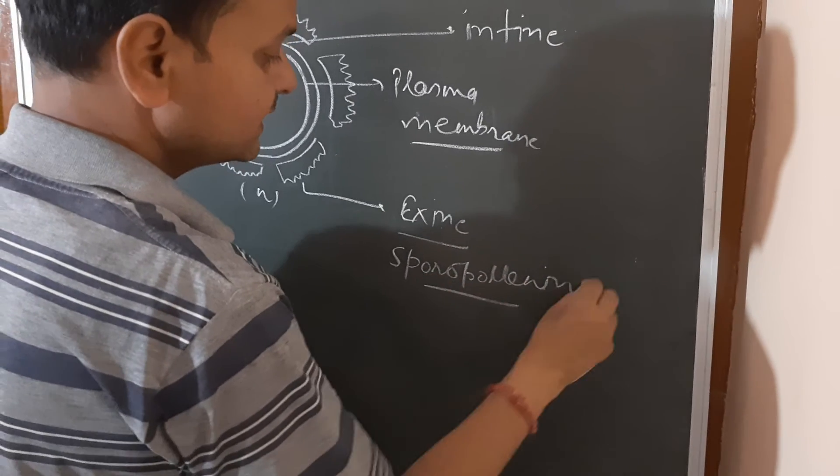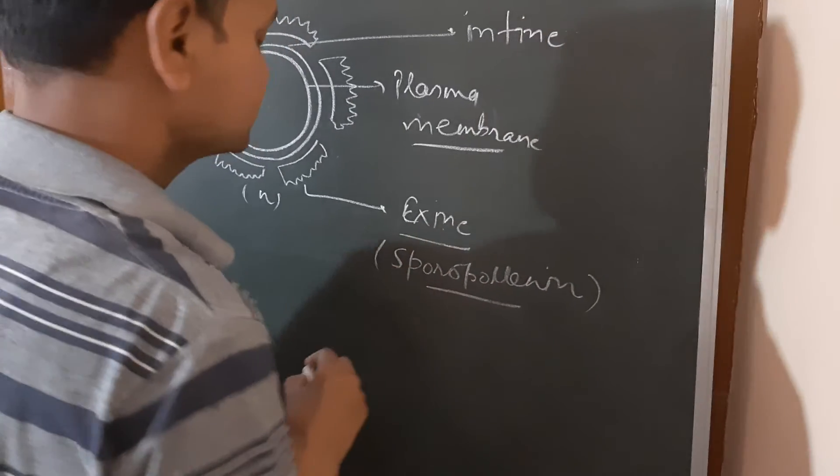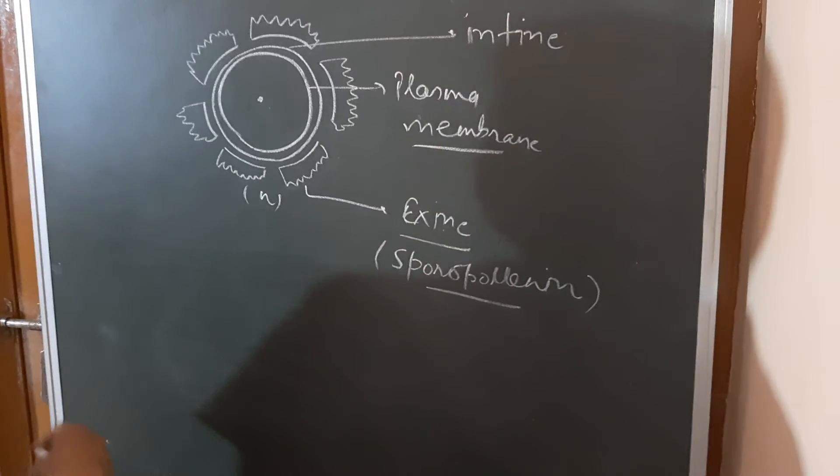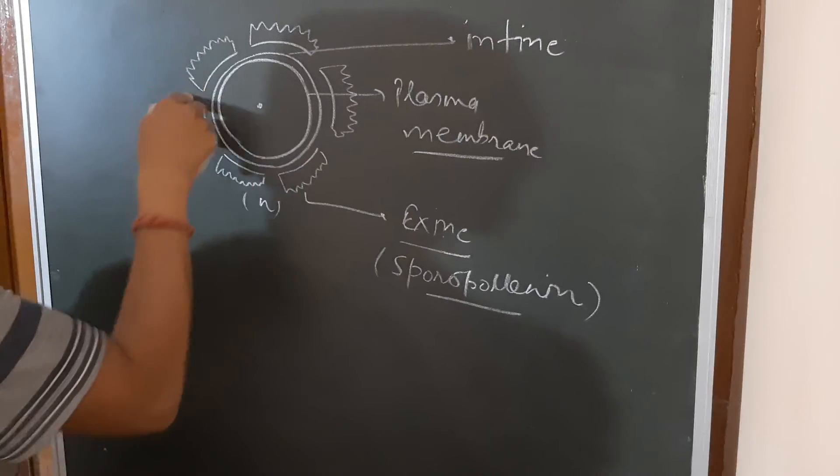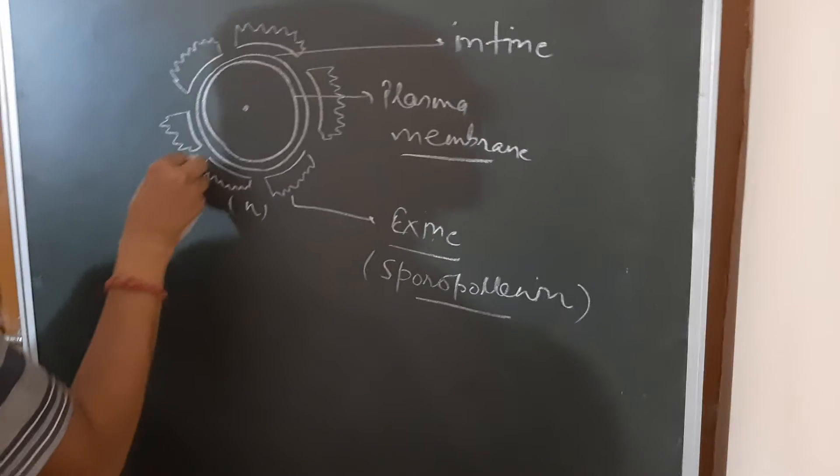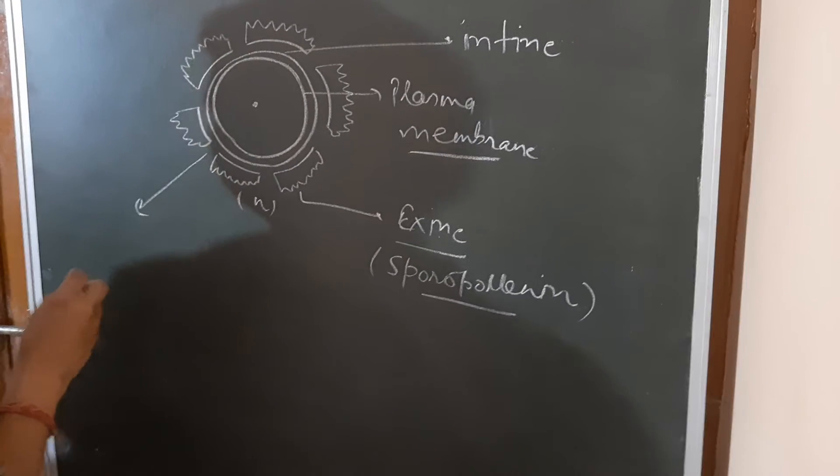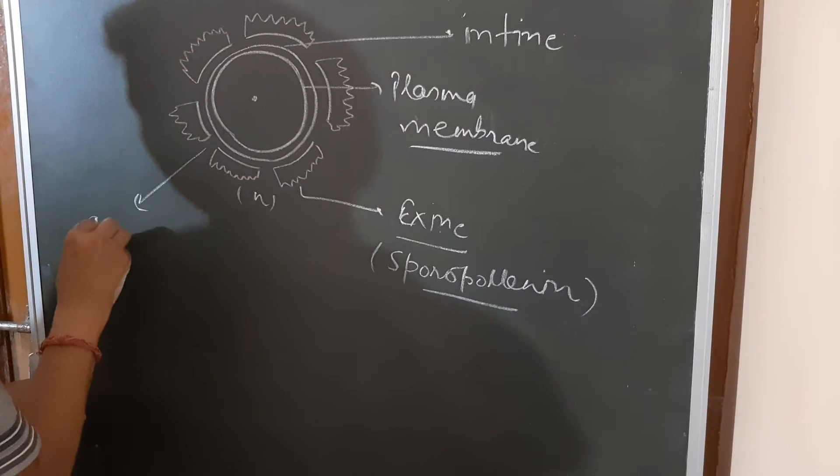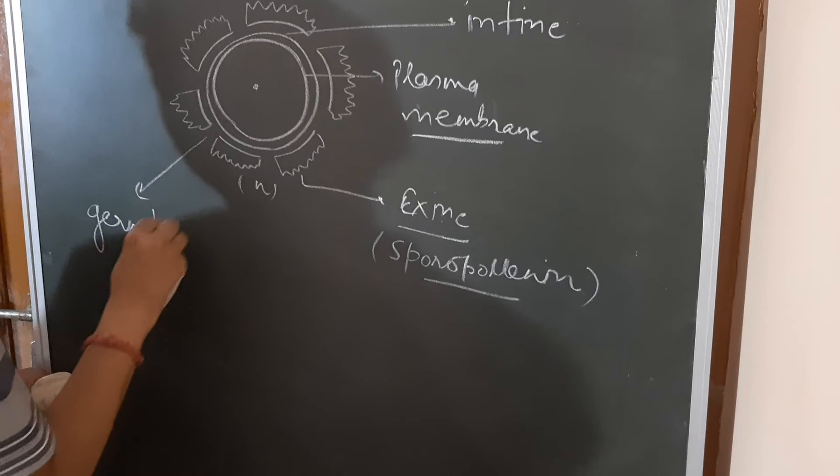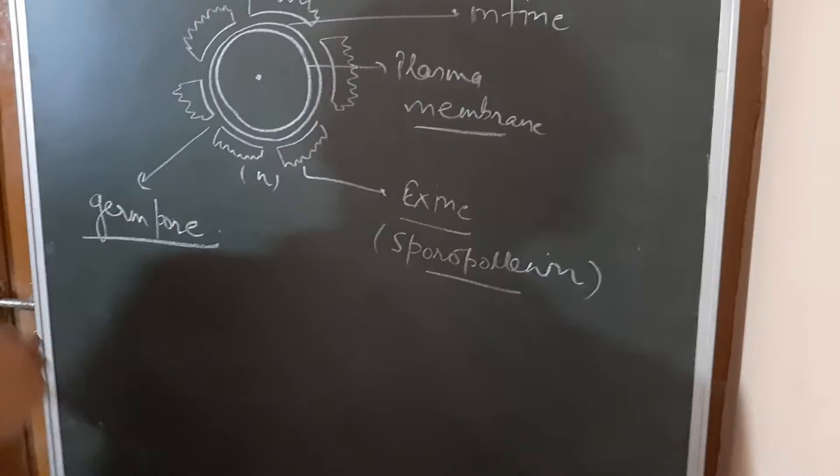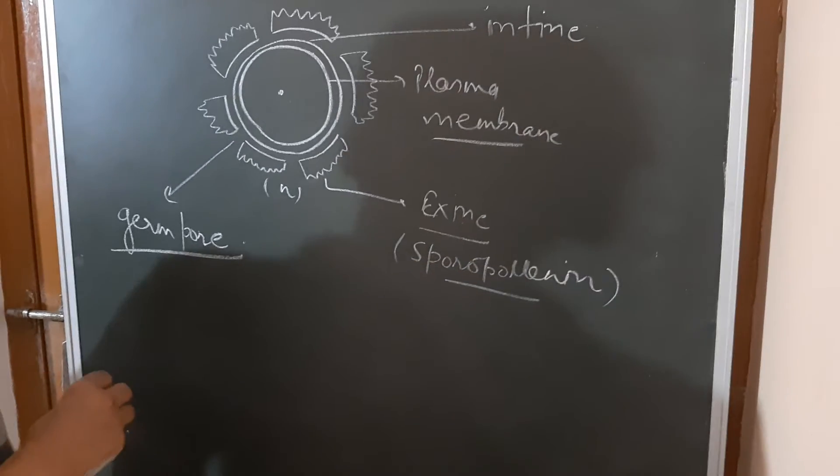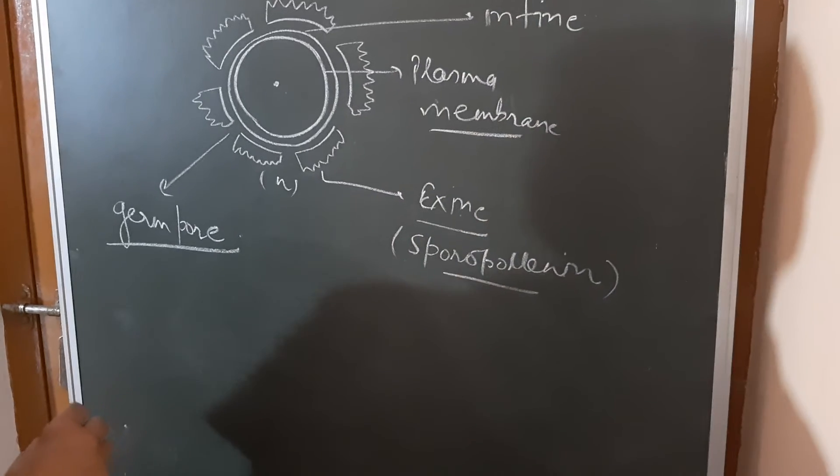Sporopollenin is not degraded by acid, base, or any enzyme. This exine layer is discontinuous as you can see. These left spaces are called as the germ pore or germ furrow. And this is responsible for the development of the pollen tube.